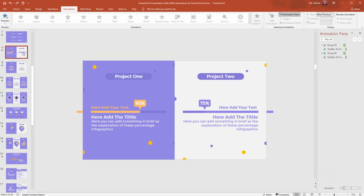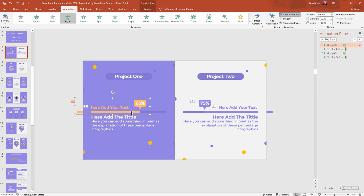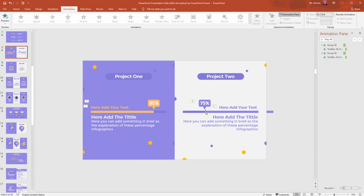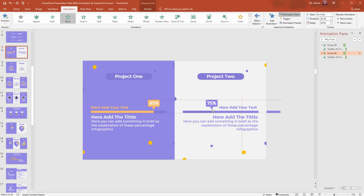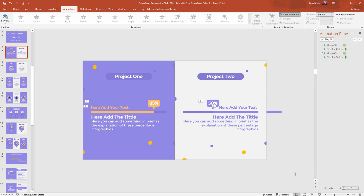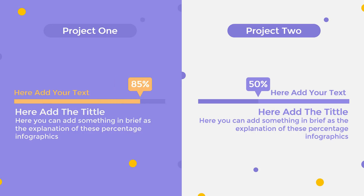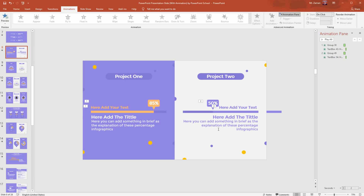In this particular slide we have tried to compare two different projects where we have added two different percentage values. Now for example if you want to show a higher percentage value, what you can do is select this group of objects, hold the shift key from your keyboard, drag it to the right, then change the value from the text box. On the other side, if you want to show a lower percentage value the process is also the same — you just need to change the position of this particular group of objects. Now if you start the slideshow or play the animation you'll get to see the changes. So let's move forward to our next infographic slide.